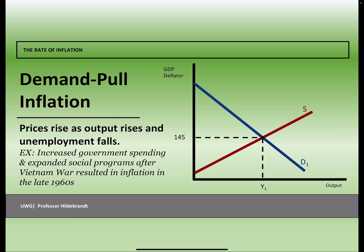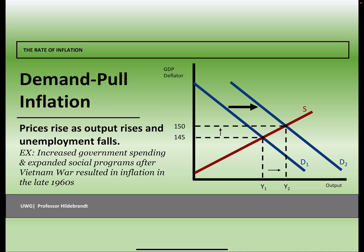The first cause is demand-pull inflation. Prices will rise as output rises and unemployment falls. We saw this happen in the late 1960s — increased government spending and expanded social programs after the Vietnam War resulted in some inflation. Here we have demand shifting to the right from D1 to D2, and you can see the price level increased from $145 to $150.